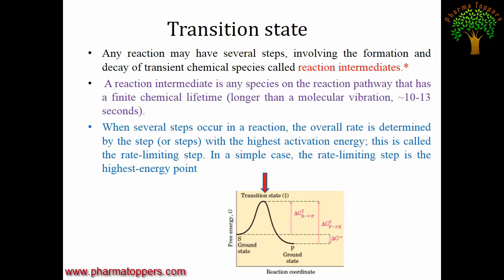Any reaction involving multiple steps involves the formation and decay of transient chemical species called reaction intermediates. For example, enzyme + substrate forms an enzyme-substrate intermediate, which then forms an enzyme-product intermediate. A reaction intermediate has a finite chemical lifetime, typically around 10⁻¹³ seconds. When several steps occur, the overall rate is determined by the step with the highest activation energy.